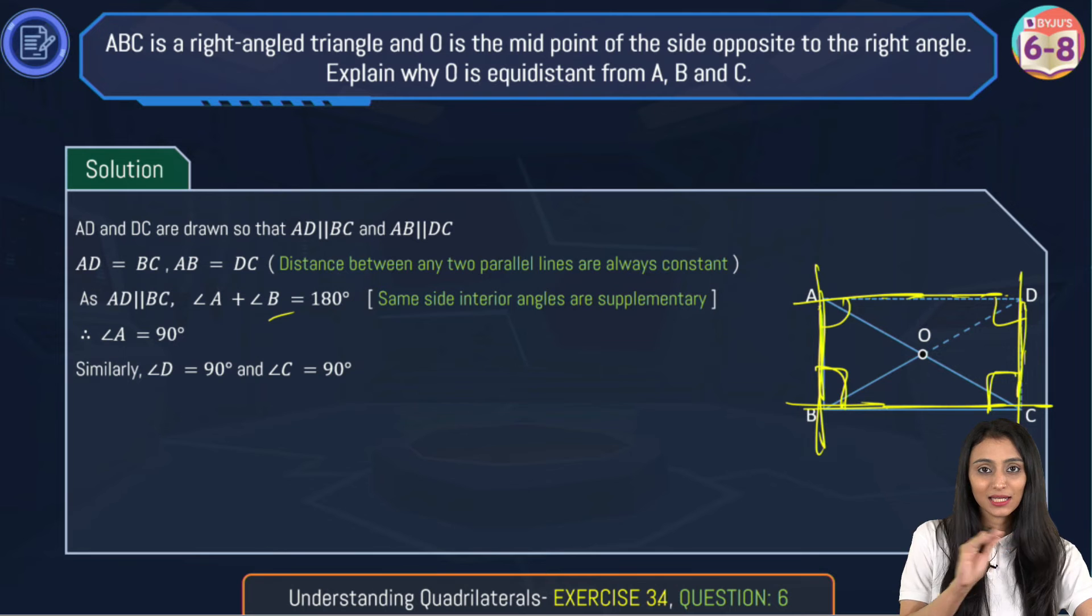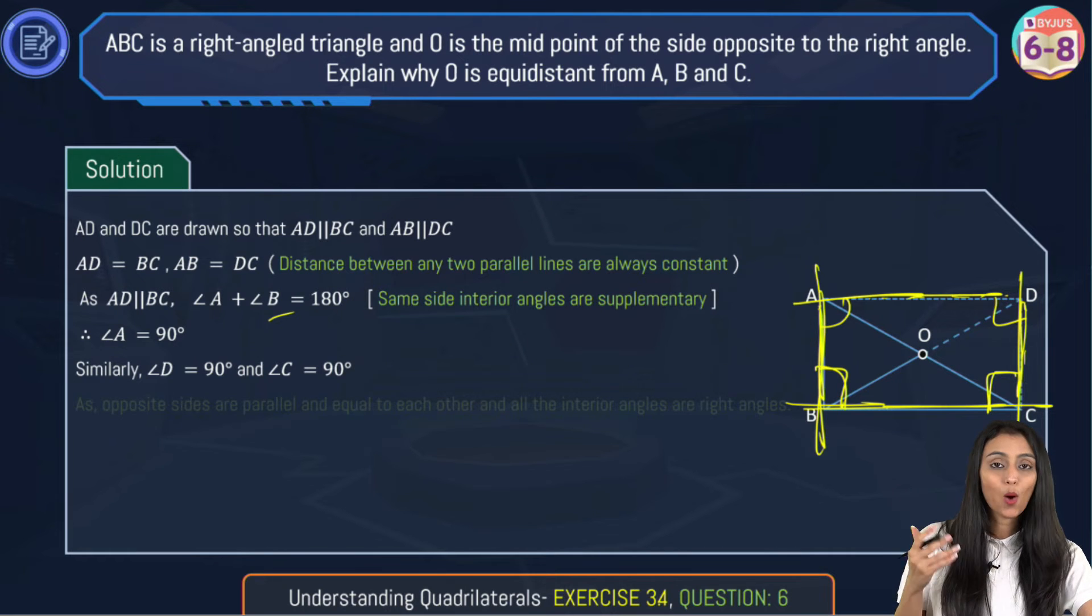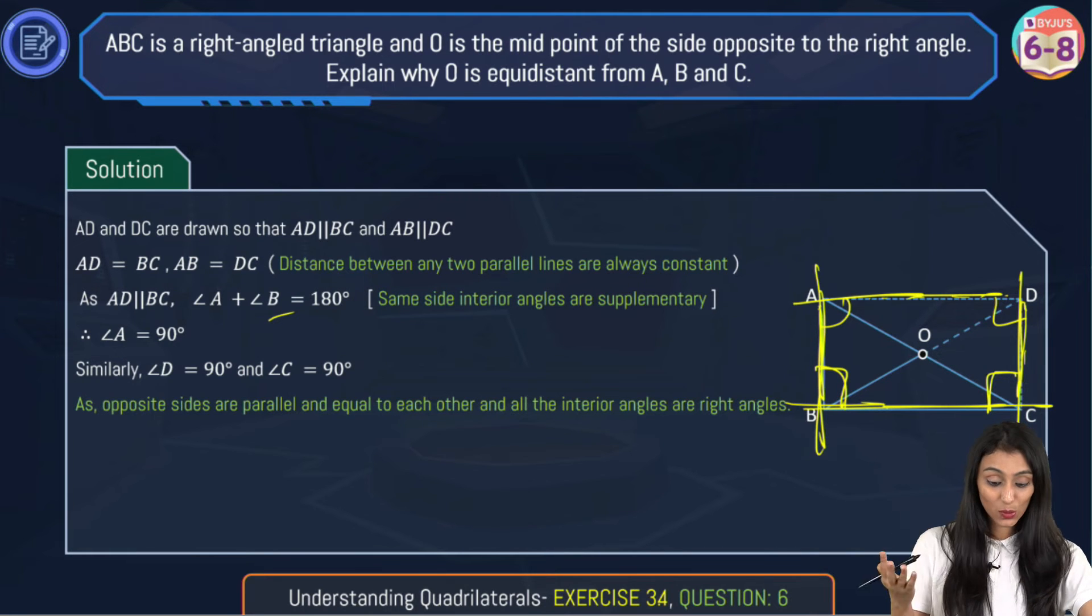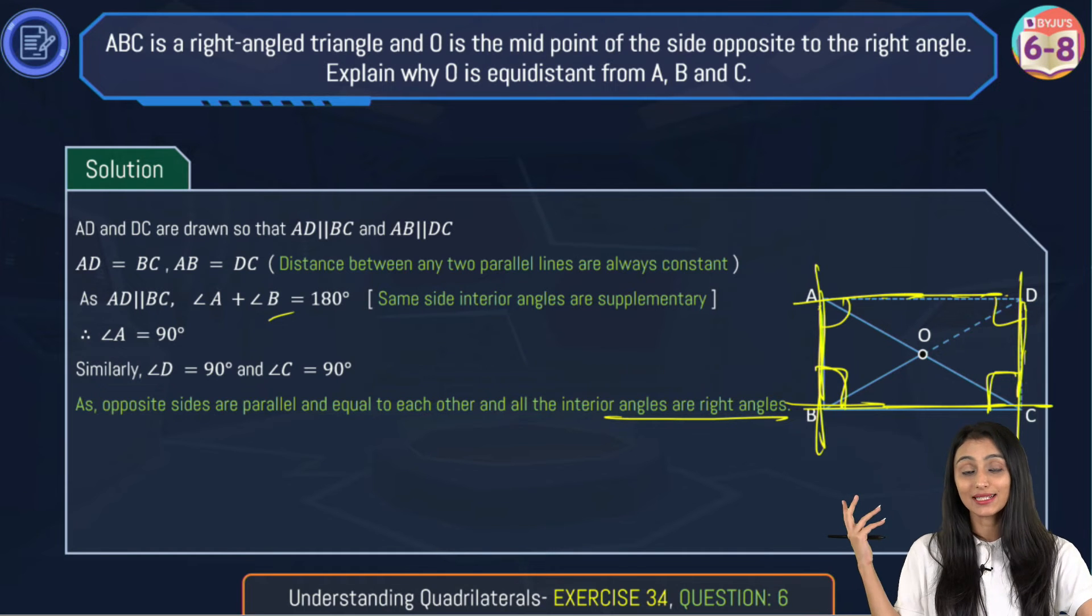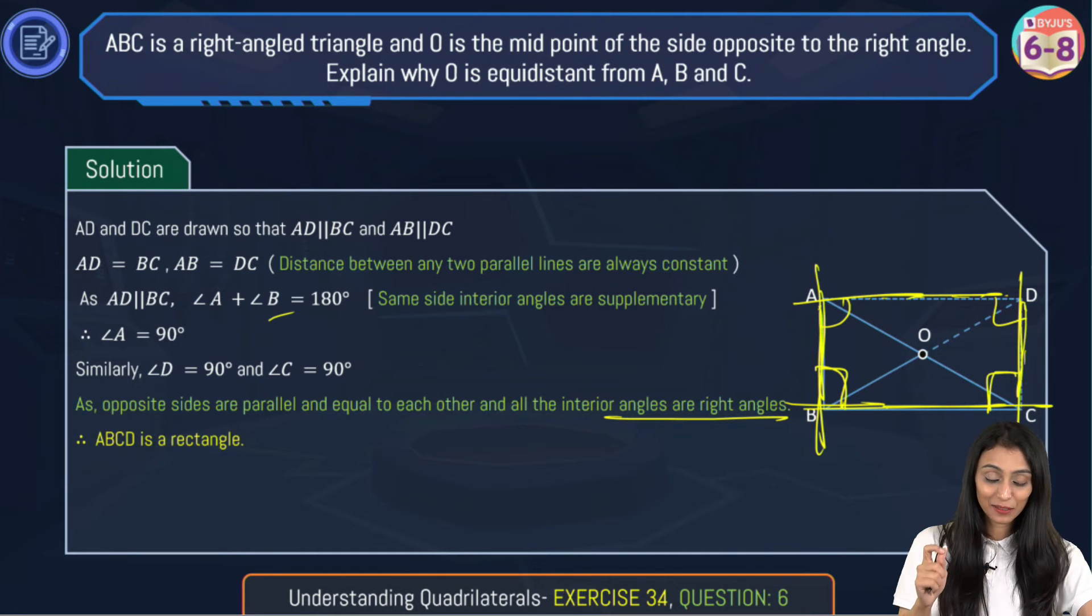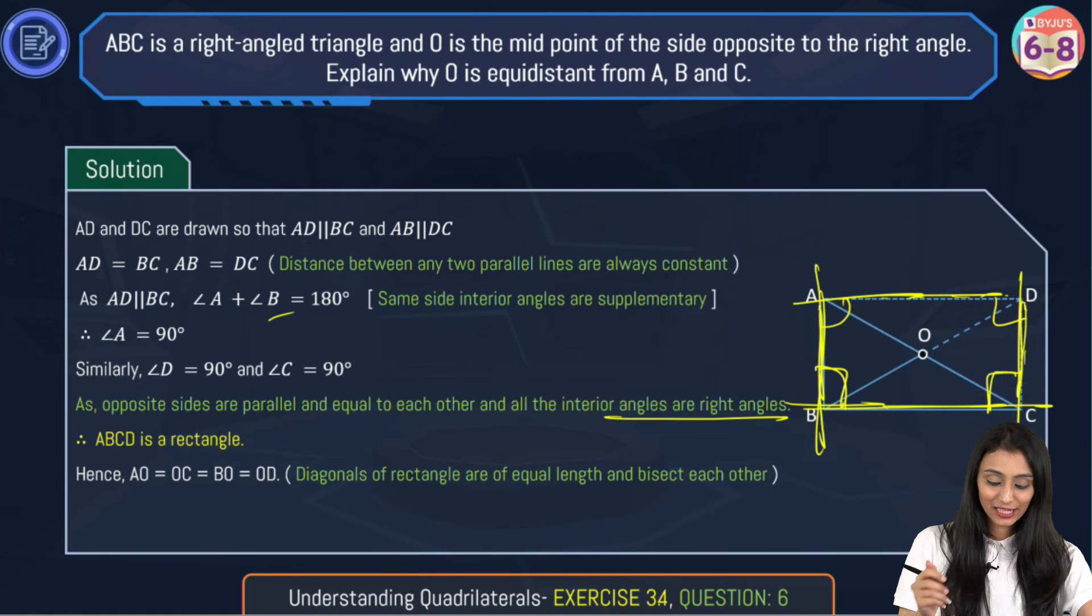Now all these angles are equal to 90 degrees. We know one thing: as opposite sides are parallel as well as equal, and all the interior angles are right angles, what type of quadrilateral is it? It's basically a rectangle, and we know that diagonals of a rectangle are equal and bisect each other.